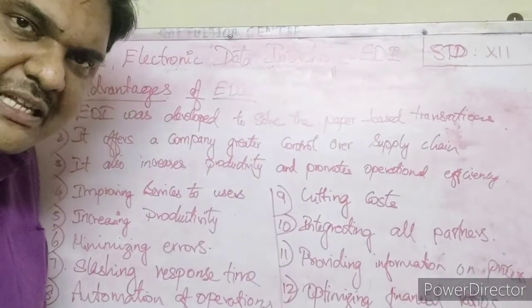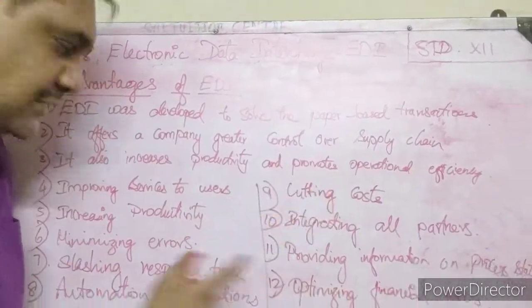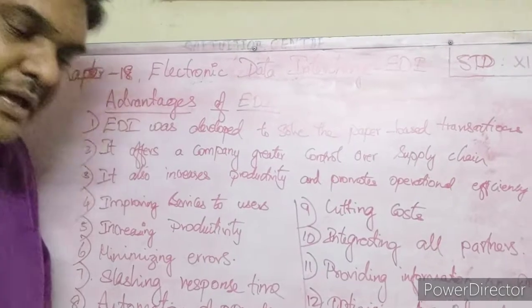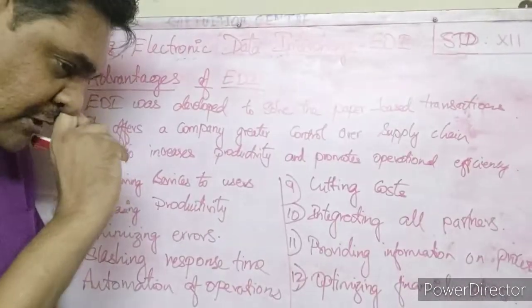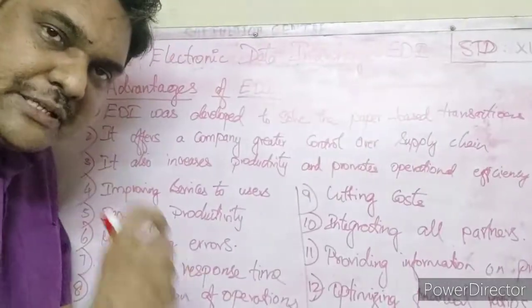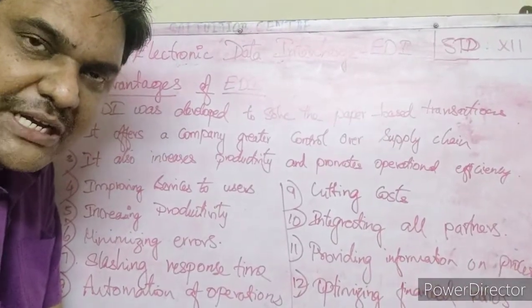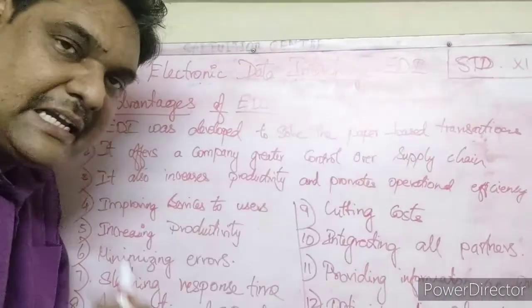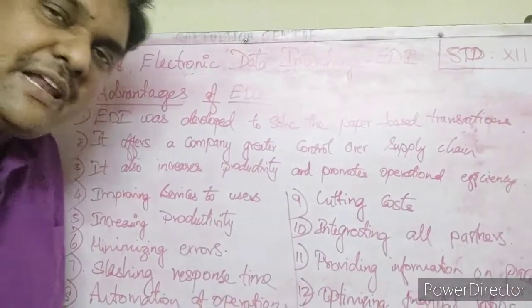Next advantage: improving services to users, making services easier. Also, increasing productivity and minimizing errors. In paper-based systems there are typing errors and printing mistakes, but with EDI it is fully automated so errors are very low. Next: slashing response time — for purchase orders and invoice generation, response time is reduced. Automation of operations makes everything fast and accurate.